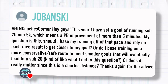One more question from Jabansky: this year I've set a goal of running sub-25 — actually sub-20 minute 5K. That's a big goal — a PB improvement of more than five minutes, which is very ambitious. My question is: should I base my training off that pace and rely on each race to get closer to the goal, or do I base my training on a more conservative route with smaller goals along the way that will eventually lead to a sub-20?